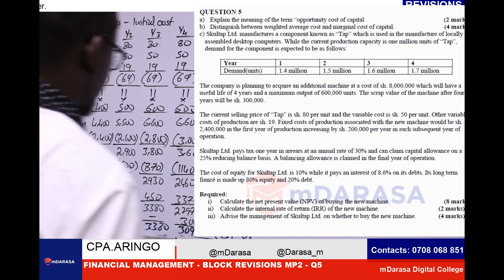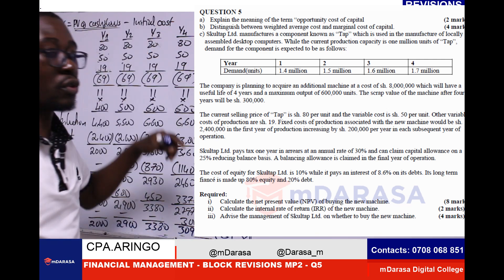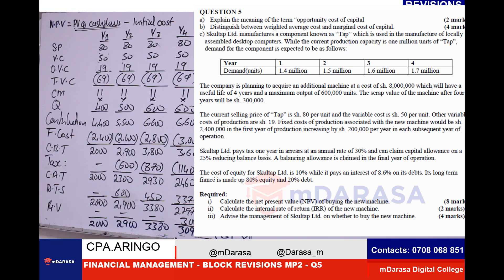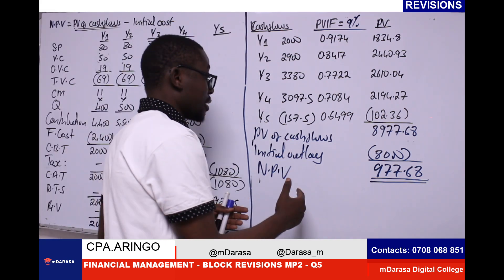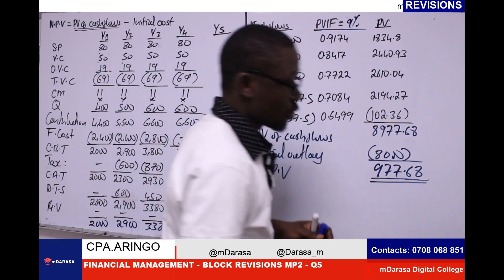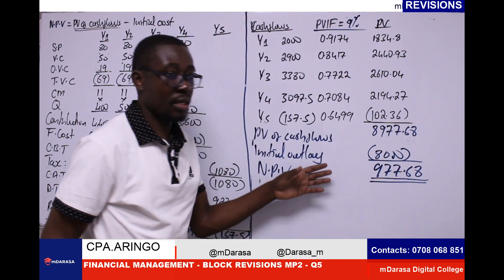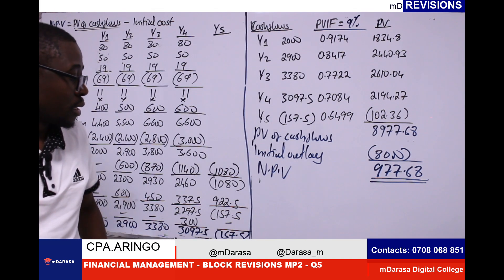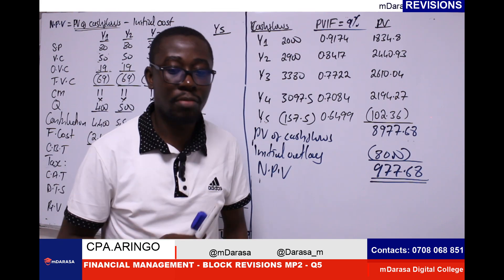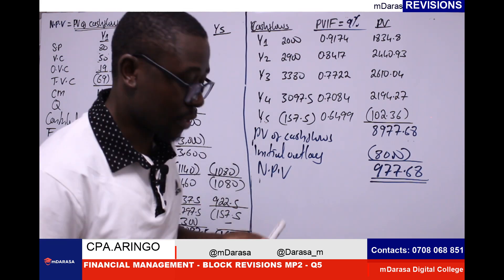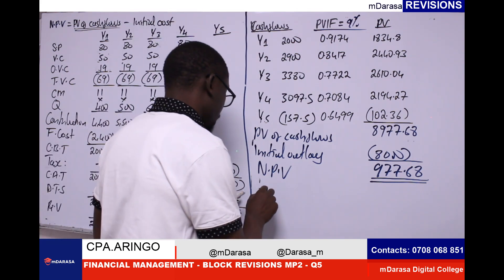In our last class, we had prepared our cash flows to determine the net annual after-tax cash flows. After that, we went ahead and worked out the concept of NPV. So the second part of the question — the examiner expects us to handle our IRR, internal rate of return.